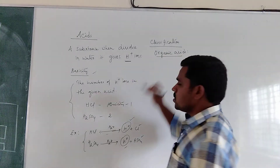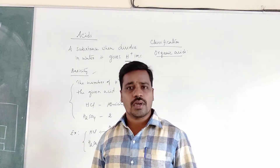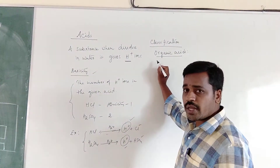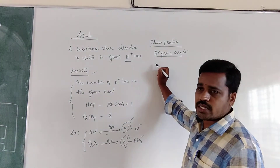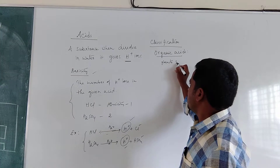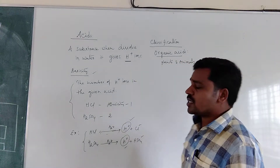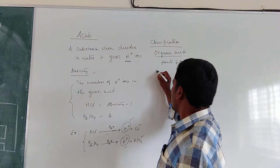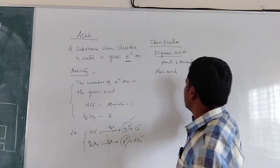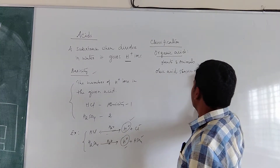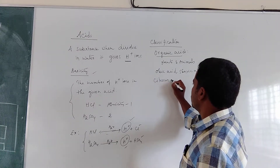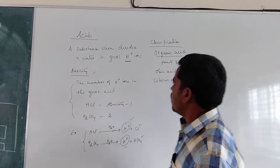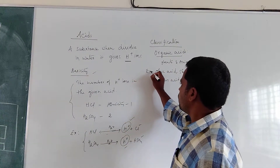Organic acids are the acids which are obtained from plants and animals. Examples of organic acids include oxalic acid, stearic acid, citric acid, and tartaric acid. All these are organic acids which are obtained from plants and animals.